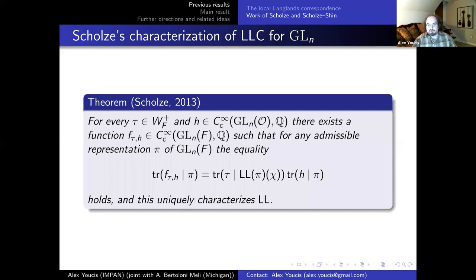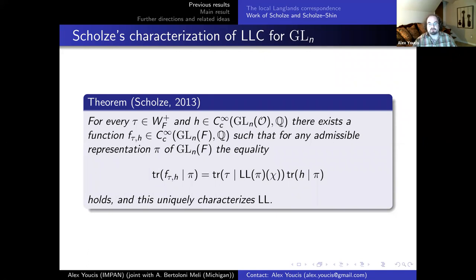Such a function could never actually be a compactly supported smooth function, so one has to add a sort of cutoff. The actual setup is that for every τ in W_F^+ and every H in the compactly supported smooth functions on GL_N(O) — a maximal compact subgroup acting as a cutoff — you can associate a function F_{τ,H} in the Hecke algebra for GL_N(F) such that: trace of F_{τ,H} on π equals trace of τ on LL(π) times trace of H on π. And this uniquely characterizes the correspondence.